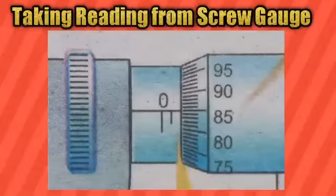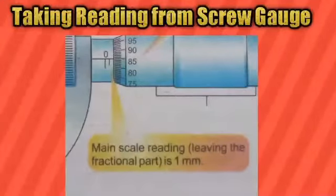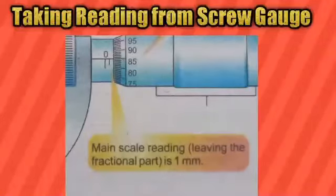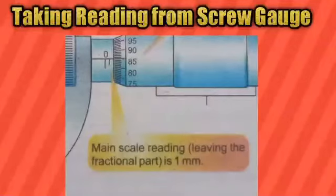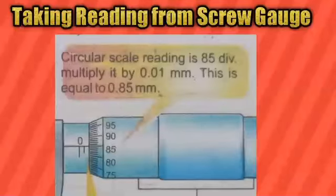Now we have to take readings on the main scale and the circular scale. When taking the main scale reading, note how many complete divisions on the main scale have been crossed by the circular scale. As you can see in this picture, only one division of the main scale has been crossed, so the main scale reading will be 1 mm. After that, note which number of the circular scale is exactly coinciding with the index line of the main scale.